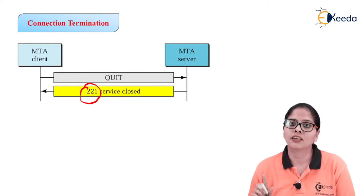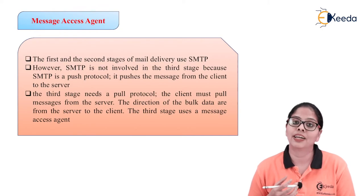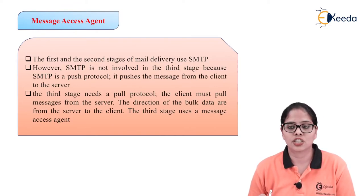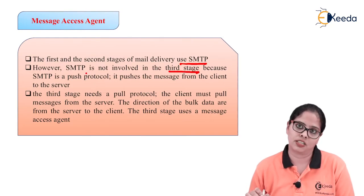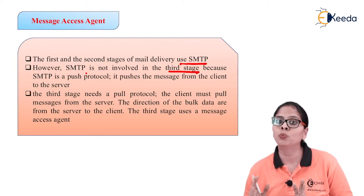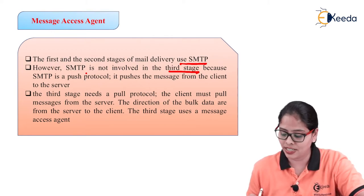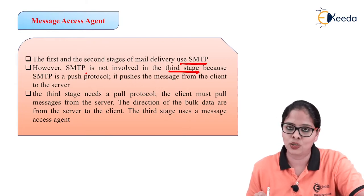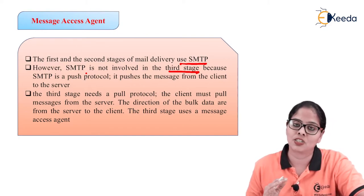Just now we discussed the message transfer agent, but at the receiver end we need the message access agent. The first and second stages of mail delivery use SMTP. However, SMTP is not involved in the third stage — it is present only for two stages: from user to mail server and between two mail servers. At the receiver, we need the message access agent because SMTP is a push protocol — it pushes messages from the client to the server. But at the receiver end, you need the pulling of the message.